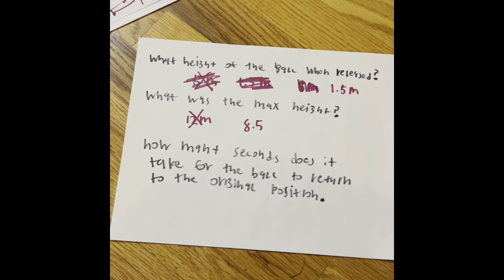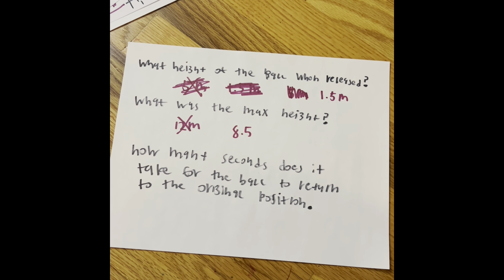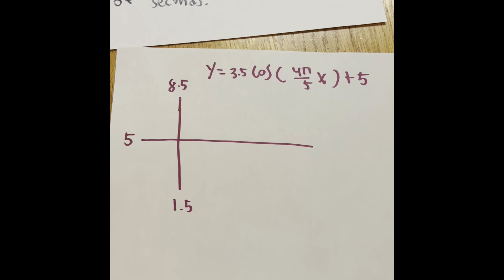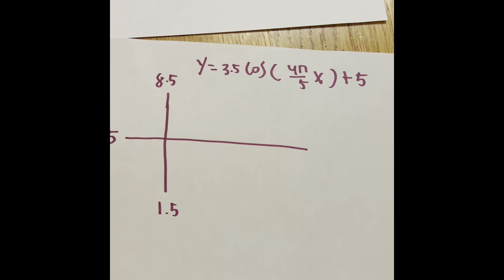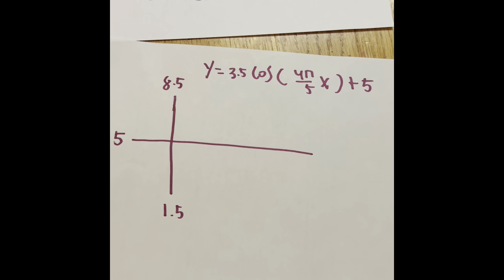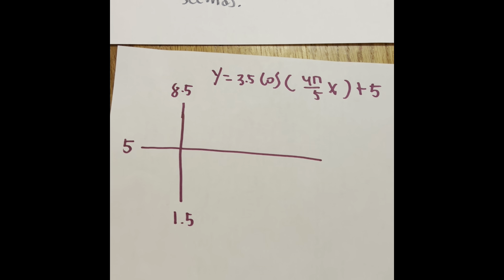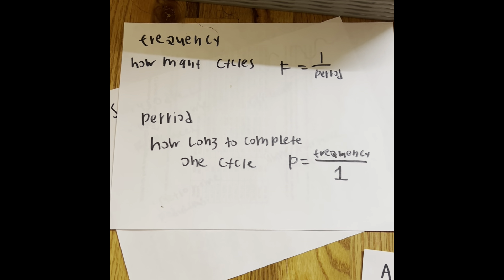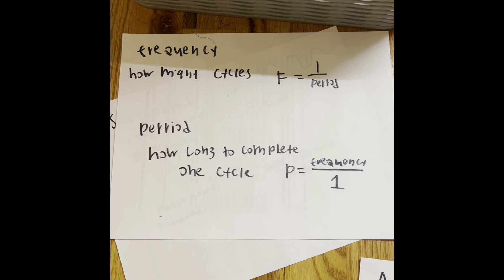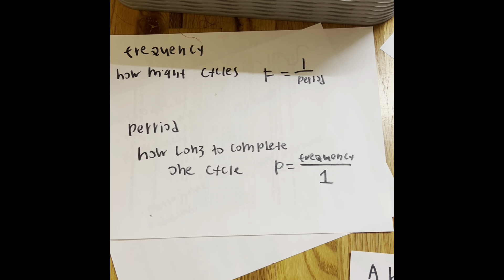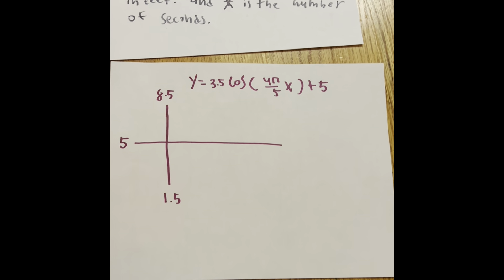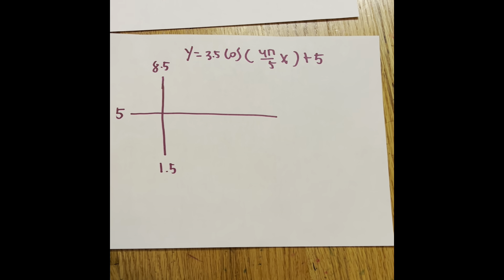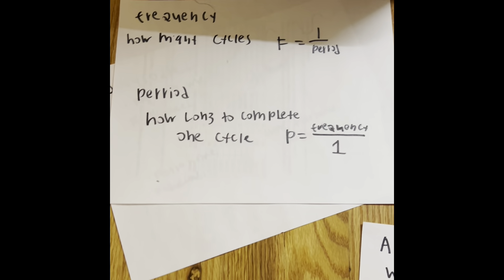Now let's find out how many seconds it takes for the ball to return to its original position. Before we understand how we do that, we know from the last video it has to do something with the frequency and the period. The frequency is how many cycles happen in an amount of time, and the period is how long it takes to complete one cycle. Since we're working with a cosine wave and need to know how many seconds it takes for the ball to complete one cycle, we must use the period.